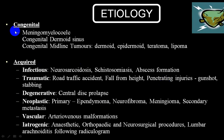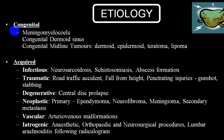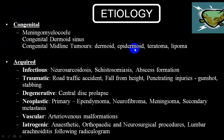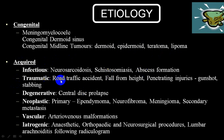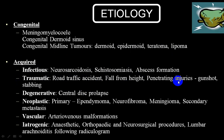At that level you can get many different conditions which can produce damage to conus medullaris or cauda equina, such as meningomyelocele, congenital dermoid sinus, congenital midline tumors like dermoid, epidermoid, teratomas, lipomas, etc., or infective pathology among the acquired group — like sarcoidosis, schistosomiasis, abscess — particularly in traumatic injury: road traffic accidents, fall from height, and penetrating injury.